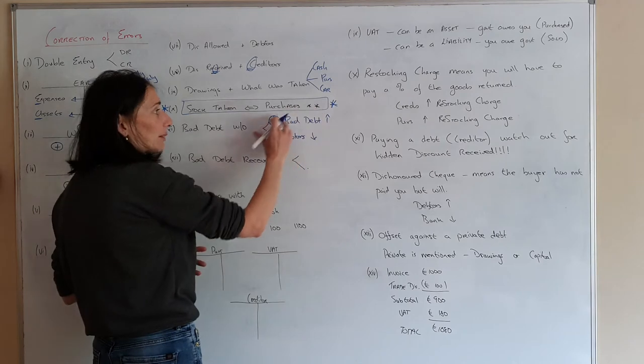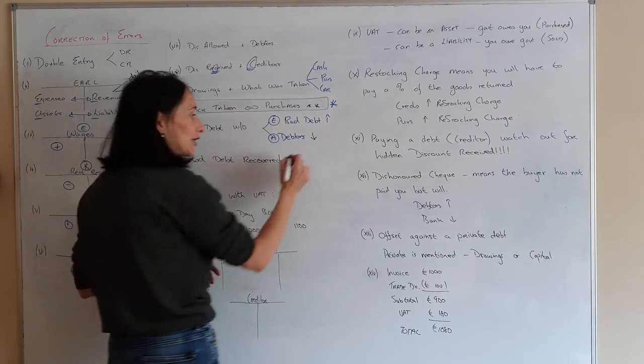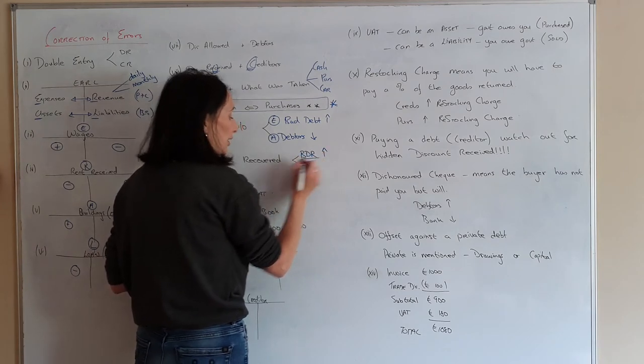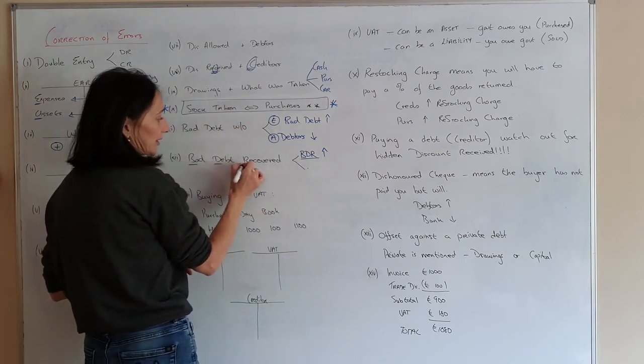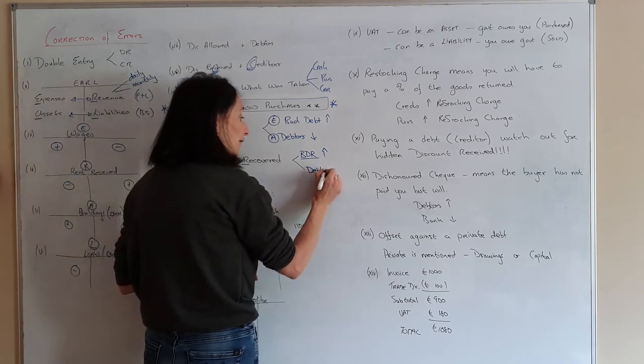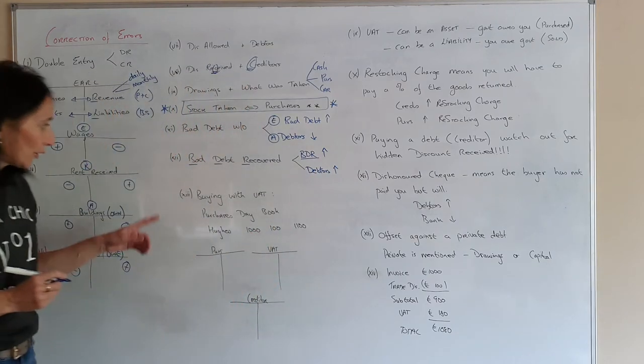So we want you to do the opposite of this. Now the only thing is you don't undo the bad debt. You put in a bad debt recovered. BDR is your term for that. You can use that in your exam. And you're going to recover it. So it means your debtors go up again.